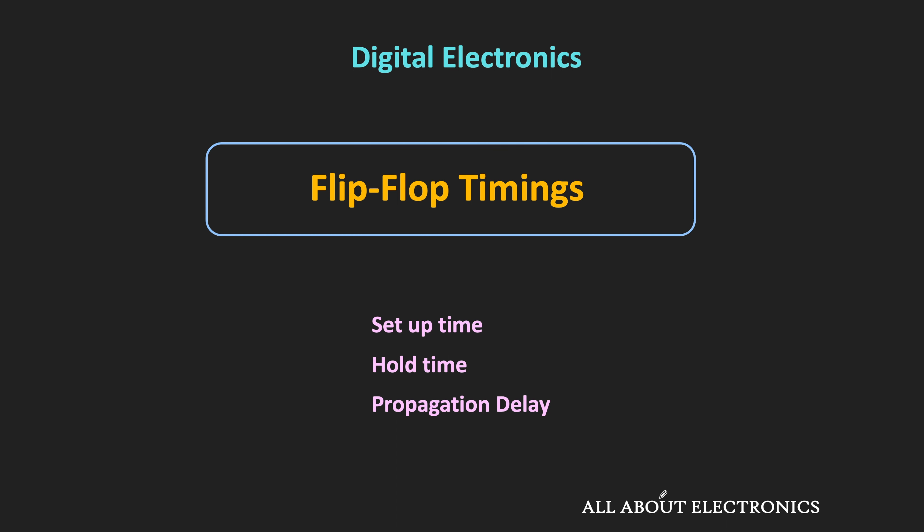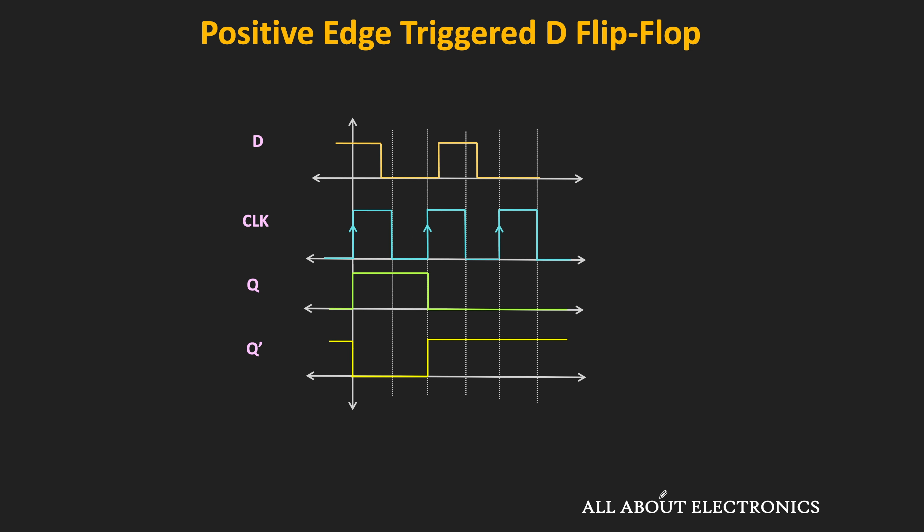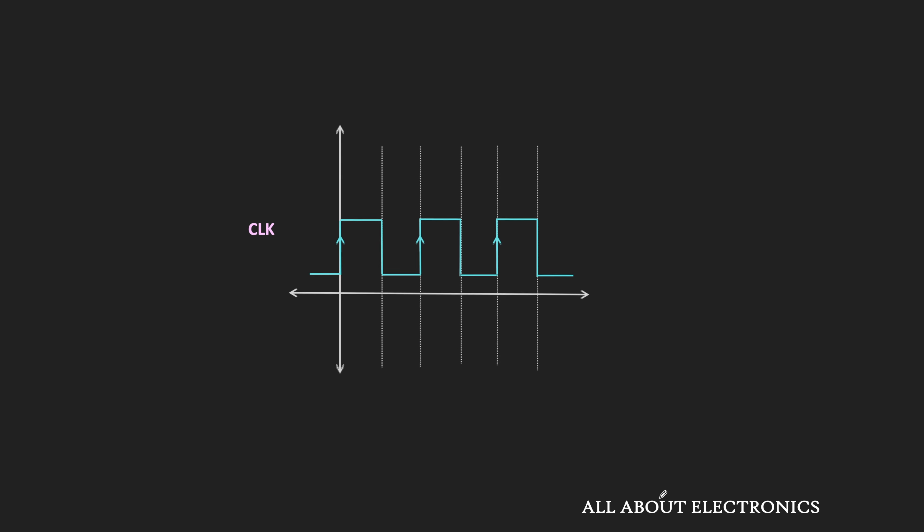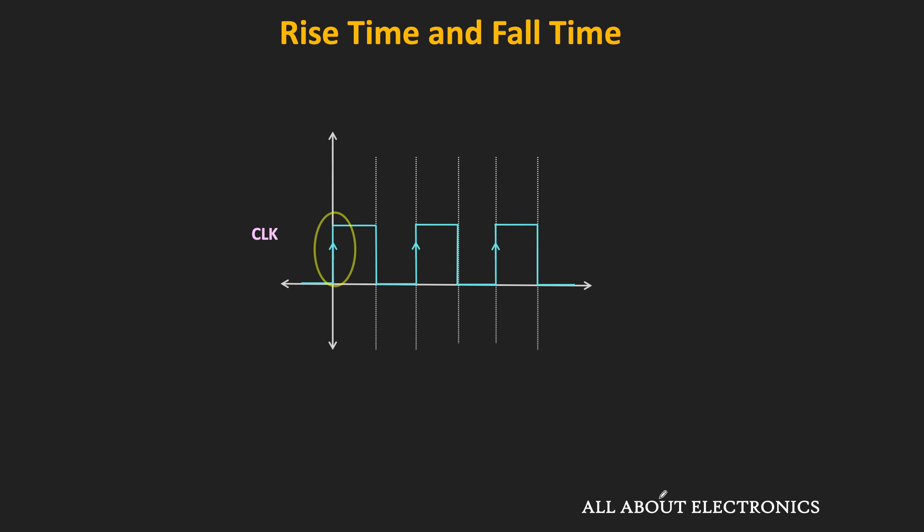Before discussing setup time and hold time, let us first discuss rise time and fall time, because so far in our discussion of digital circuits, we haven't covered these. In the earlier videos of the flip-flop, we have already seen the timing diagrams where the clock signal as well as inputs and outputs were changing very sharply — for example, with very sharp low-to-high and high-to-low transitions.